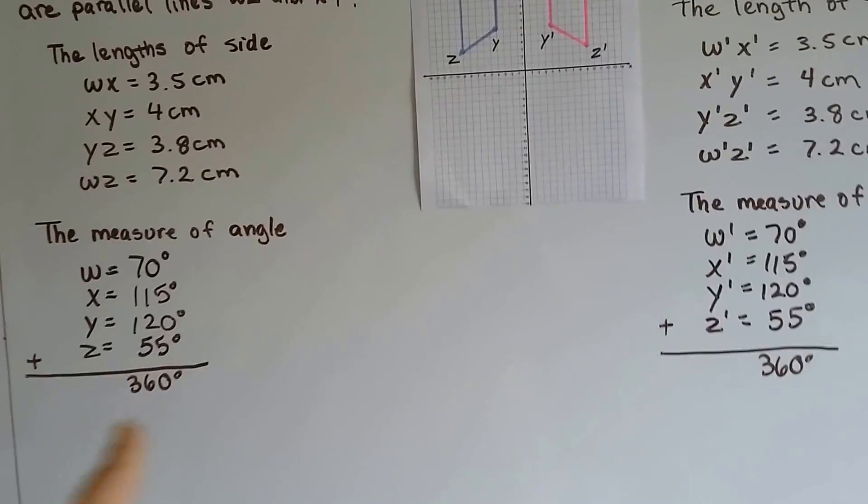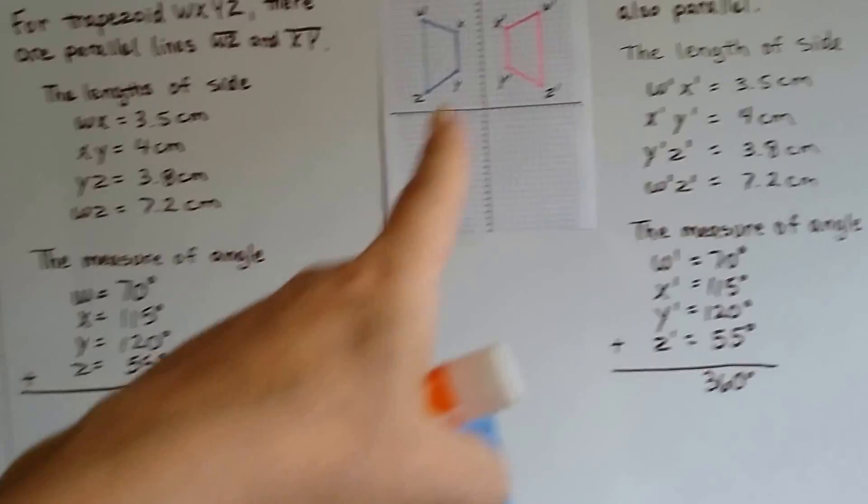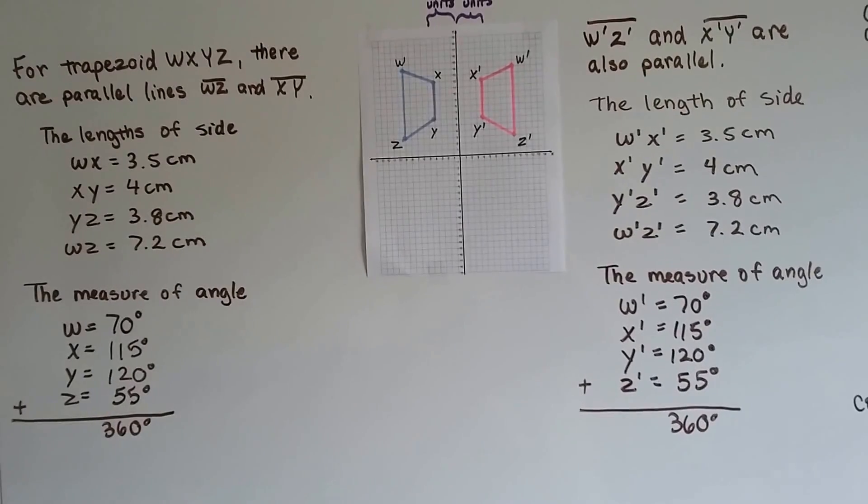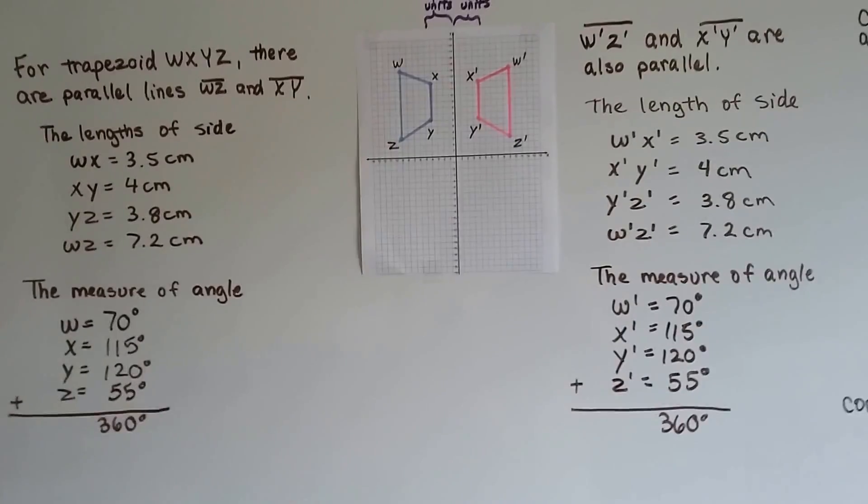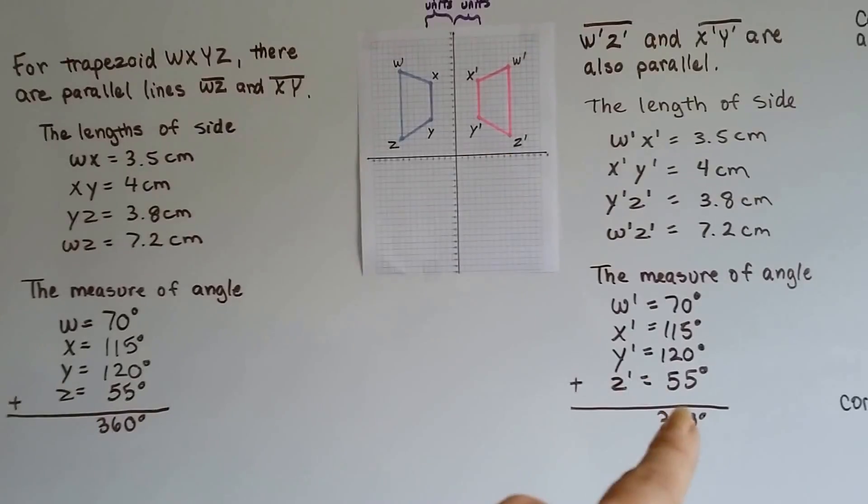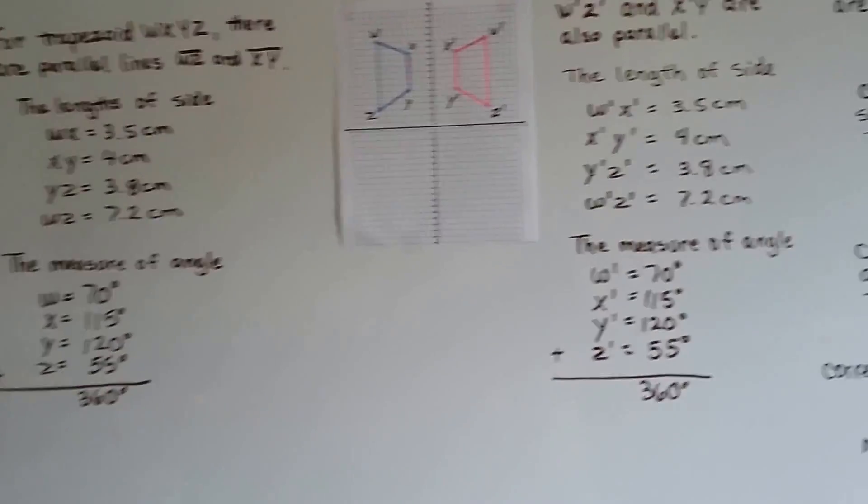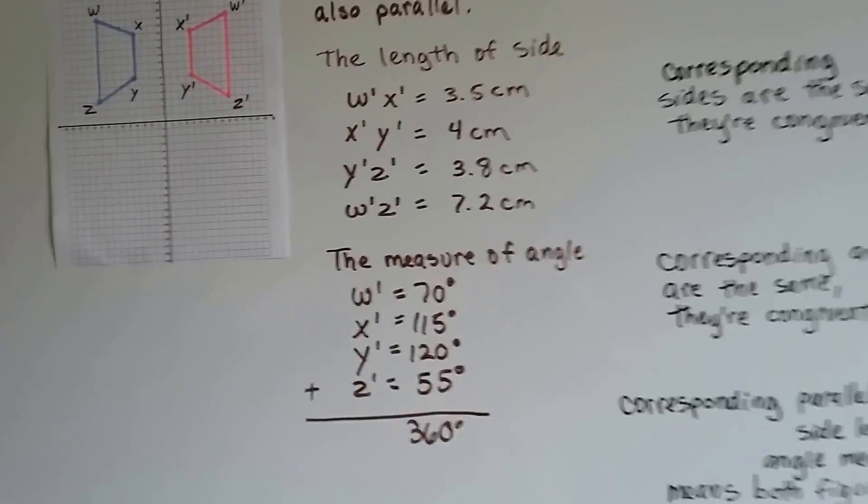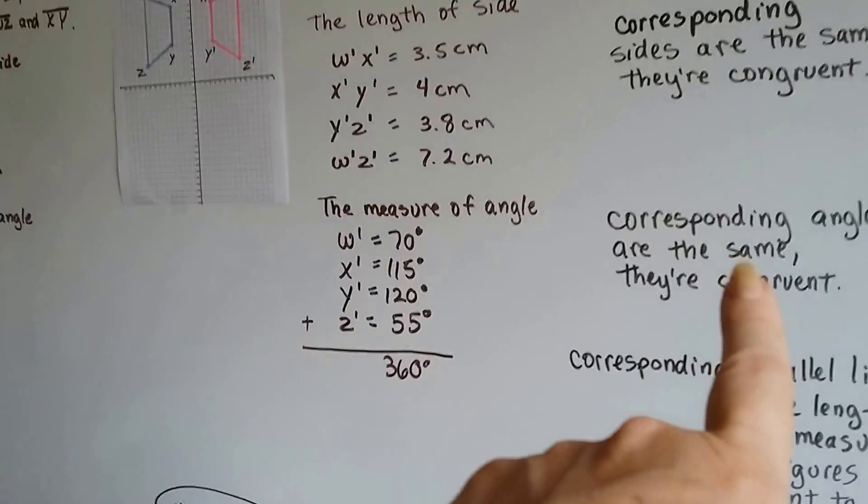When I totaled them up, they were 360 degrees, like they were supposed to be. It's a quadrilateral, so they're 360 degrees inside. They're both 360 degrees. So the corresponding angles are the same. They're congruent.